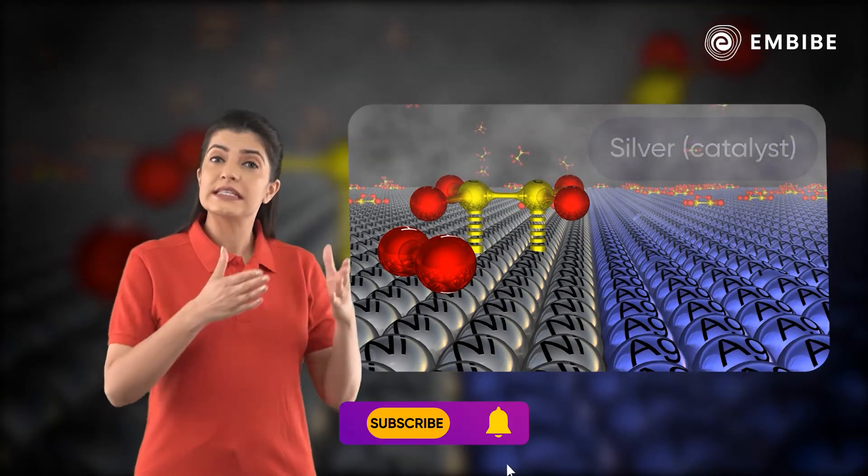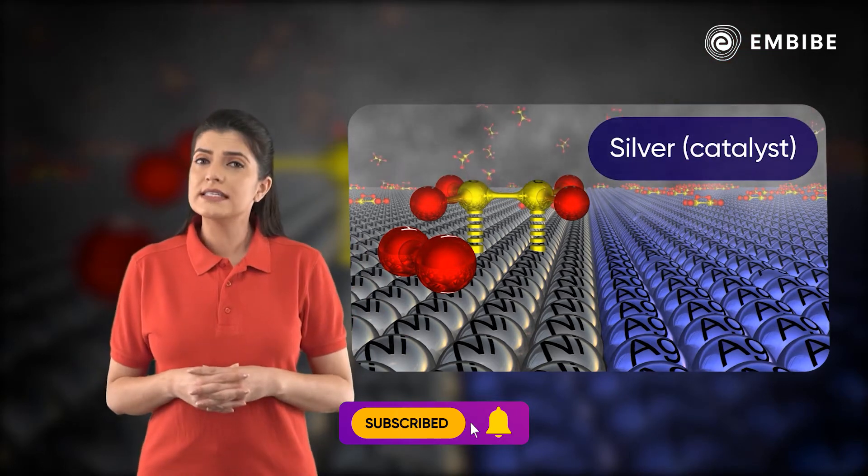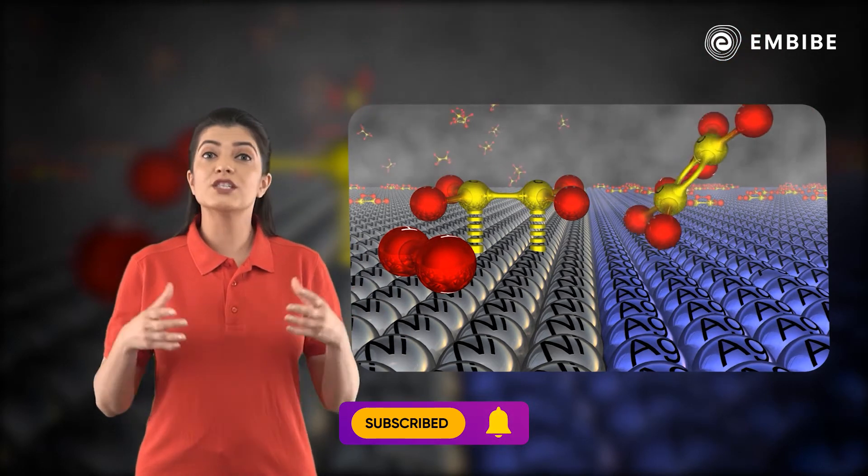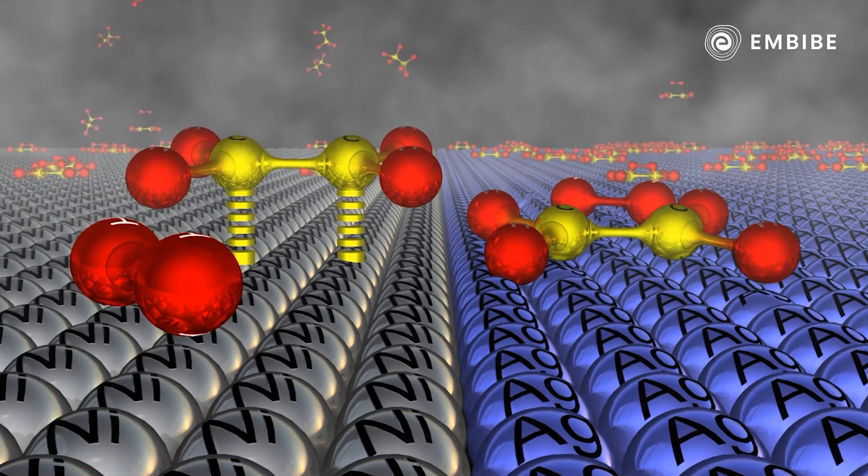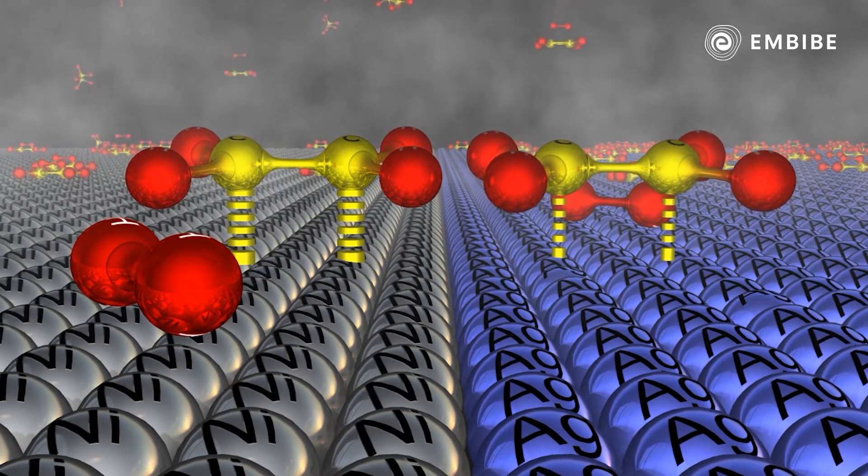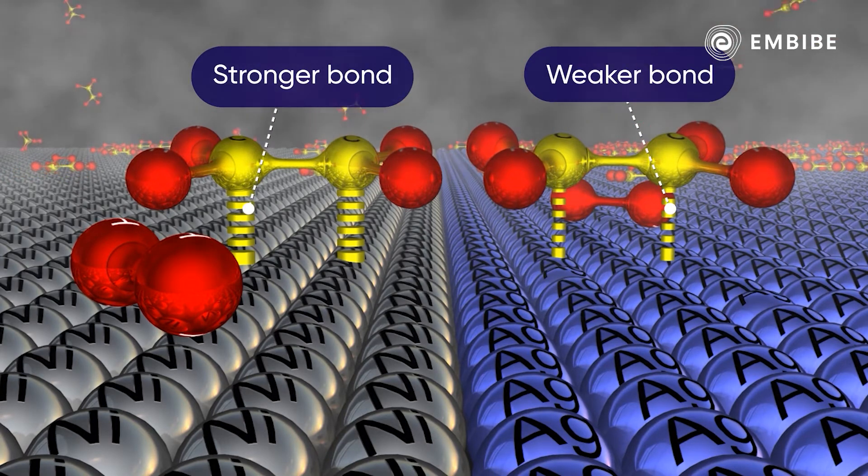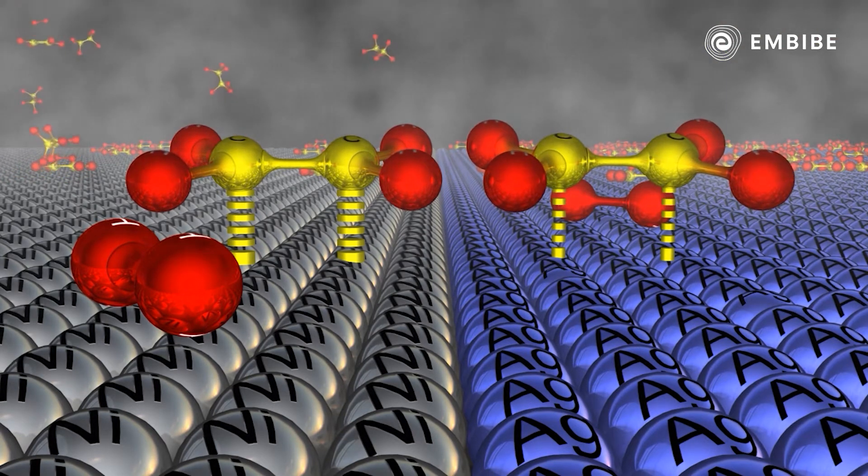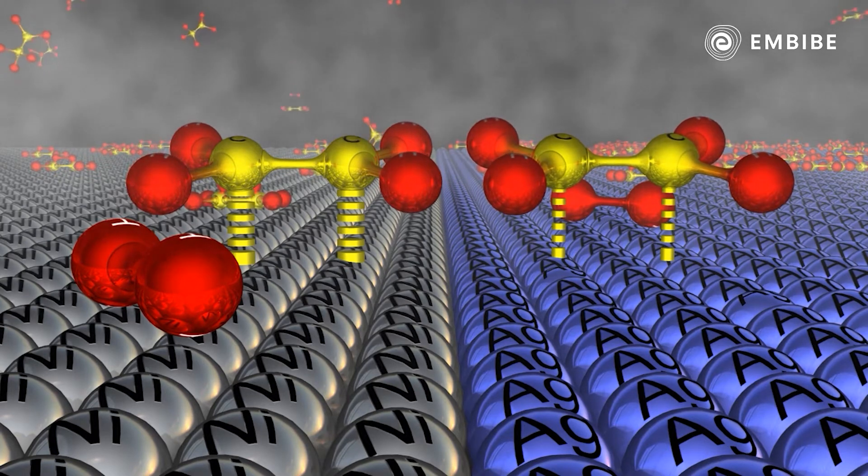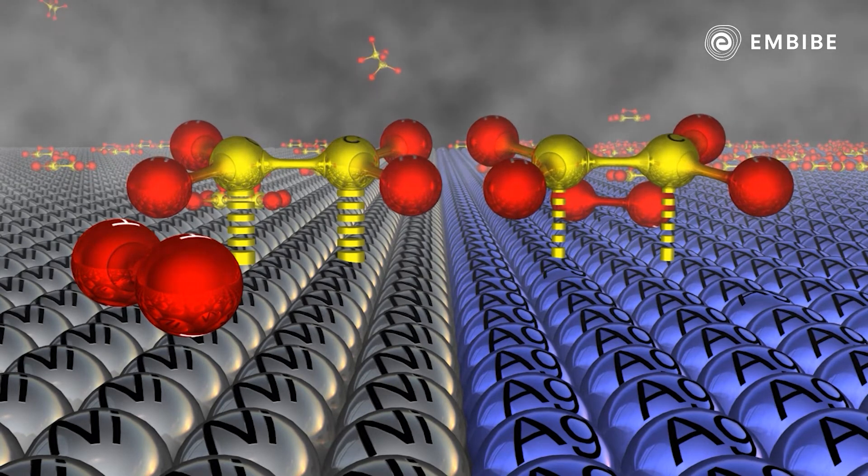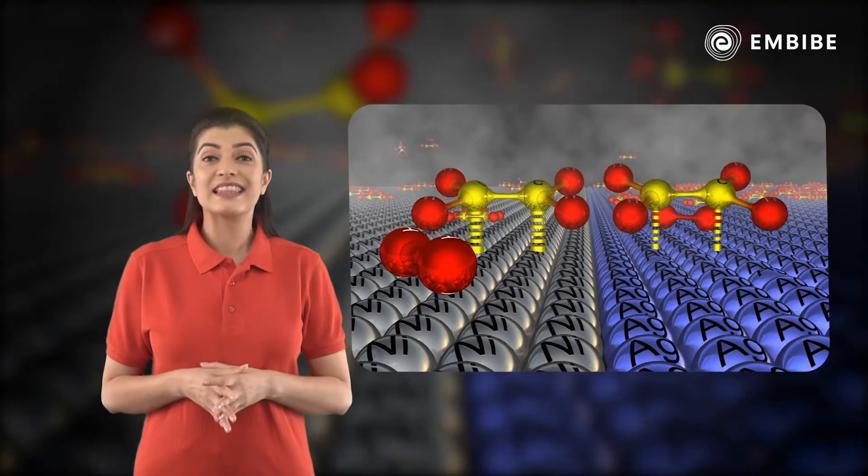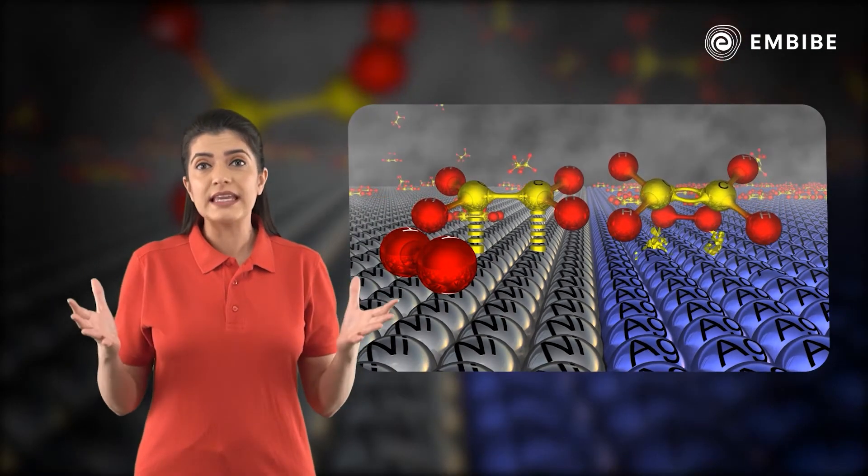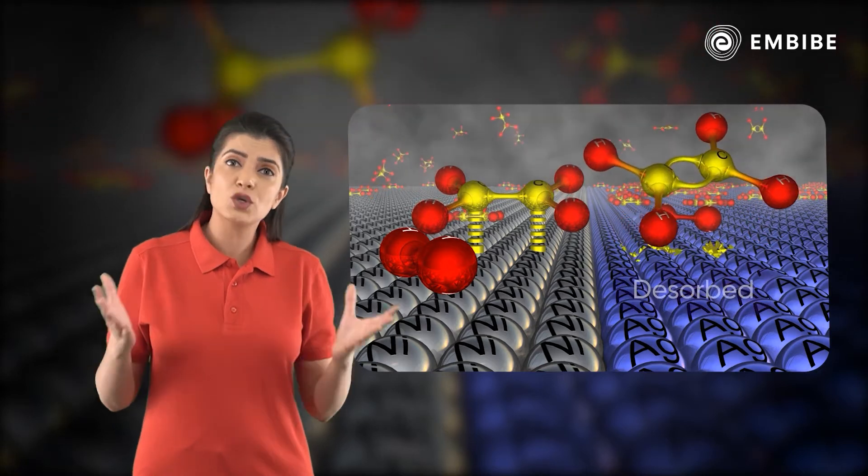If the same hydrogenation reaction is carried out using silver as a catalyst, a similar activated complex is formed between ethene and silver. However, the bonds formed here are much weaker compared to those between ethene and nickel. Hence, the silver catalyst is unable to hold on to the reacting gases long enough for the reaction to take place.